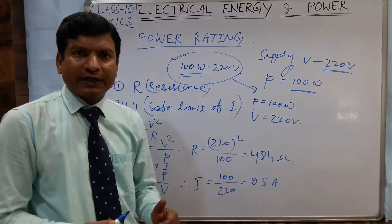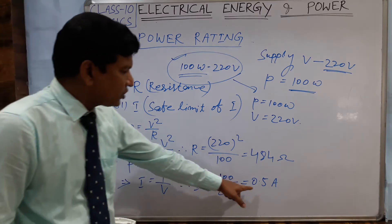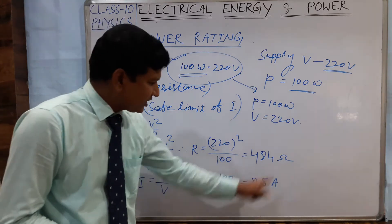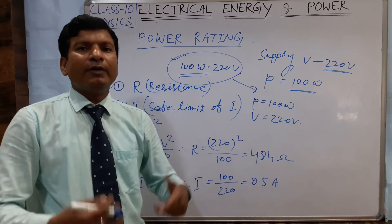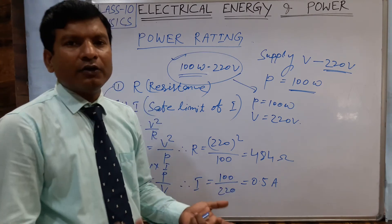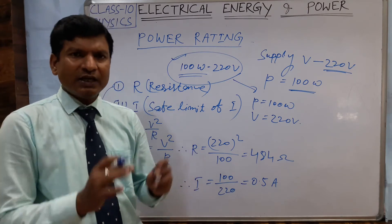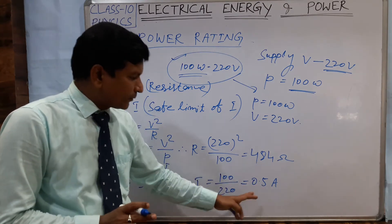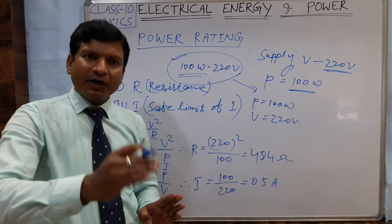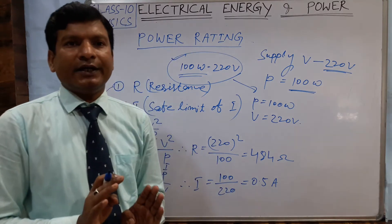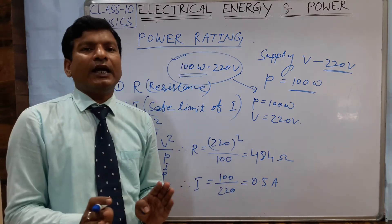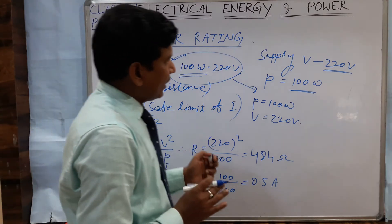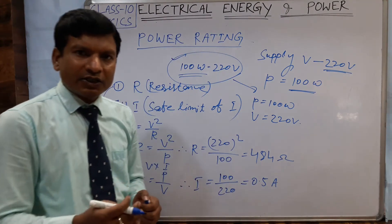The safe limit of current means the bulb can withstand a current of 0.5 ampere. If the current exceeds this value, the bulb will be fused or there will be some damage. So if the current exceeds the safe limit, the bulb or the electrical appliance will be damaged. This is the meaning of the safe limit of current.